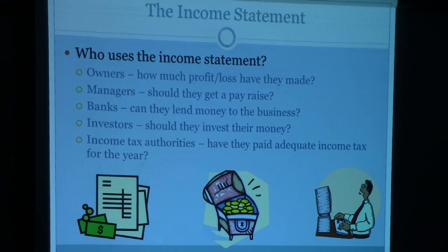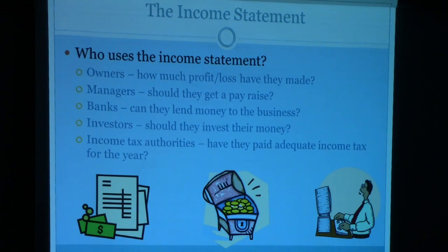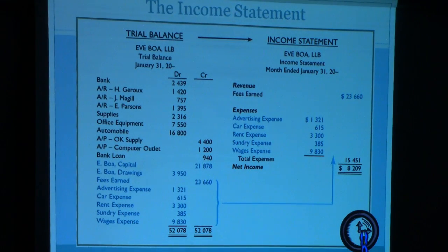As for the income statement, there are five predominant users: owners need to know their profit or loss, managers, banks for loaning money, investors deciding whether to invest, and income tax authorities determining how much tax to levy. The income statement from the expanded ledger should have revenues, expenses, and either a net income or a loss.